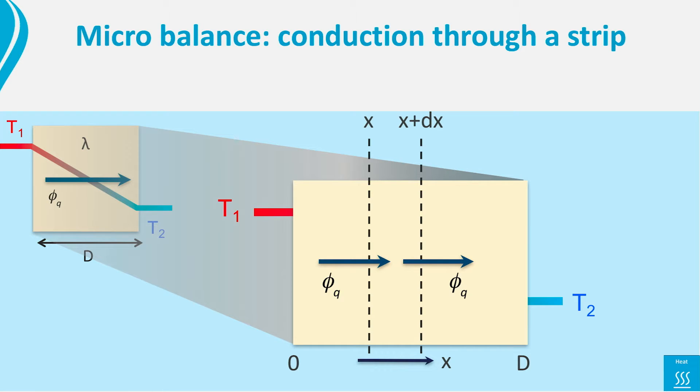From the left heat is flowing in, and from the right heat is flowing out. However, in general, these two heat flows don't need to be equal. Thus we label them: the left one by x, as it flows in at position x, and the right one by x plus dx, as it flows out at location x plus dx.